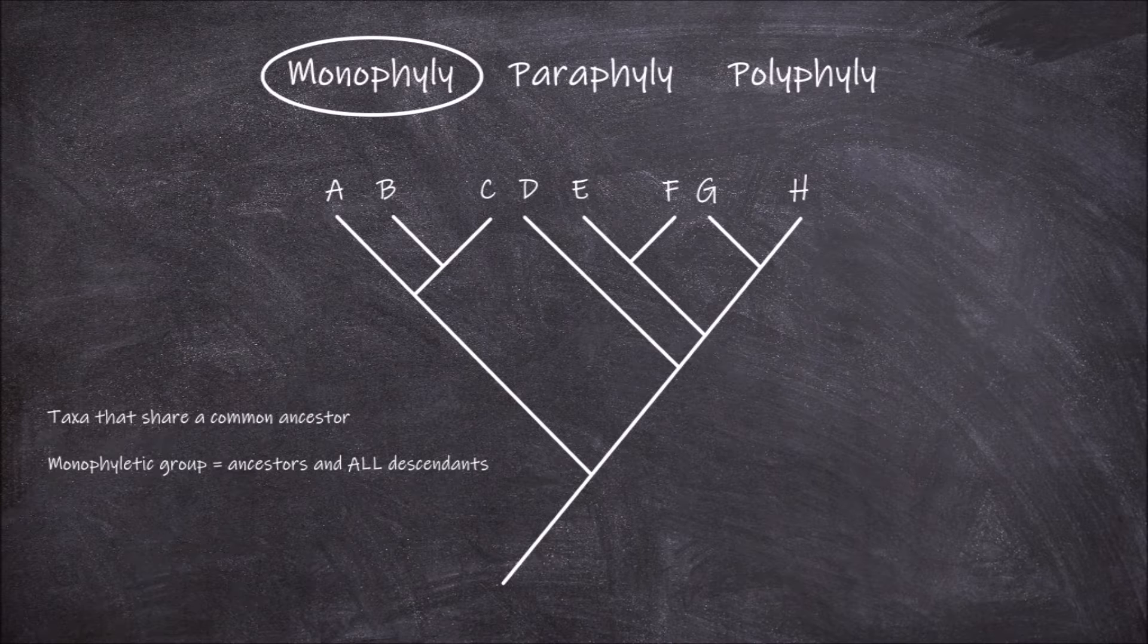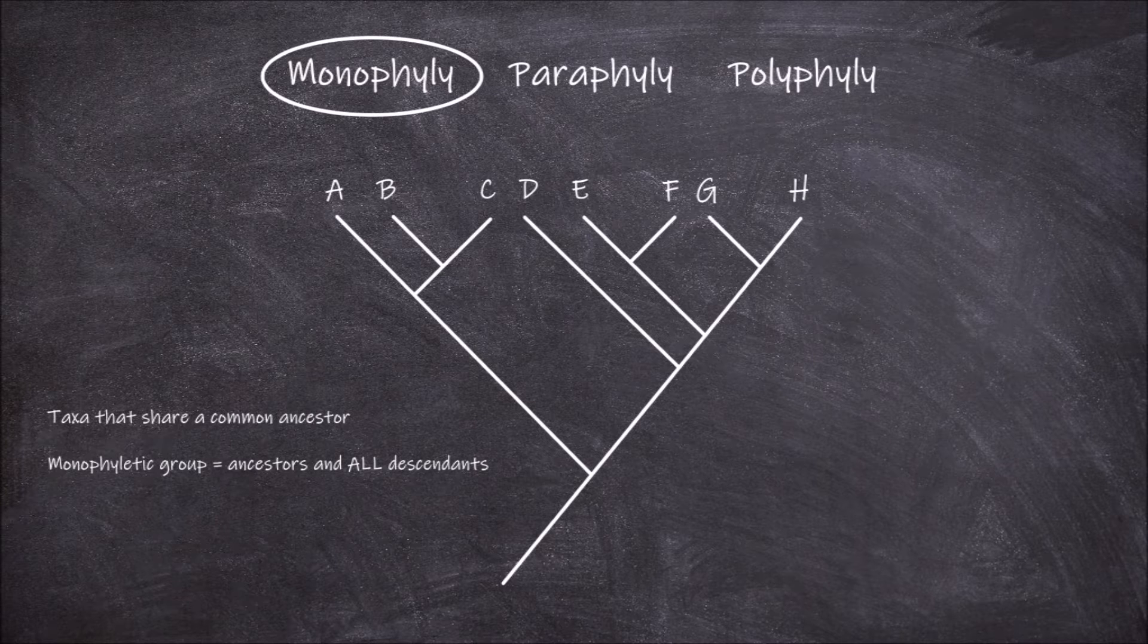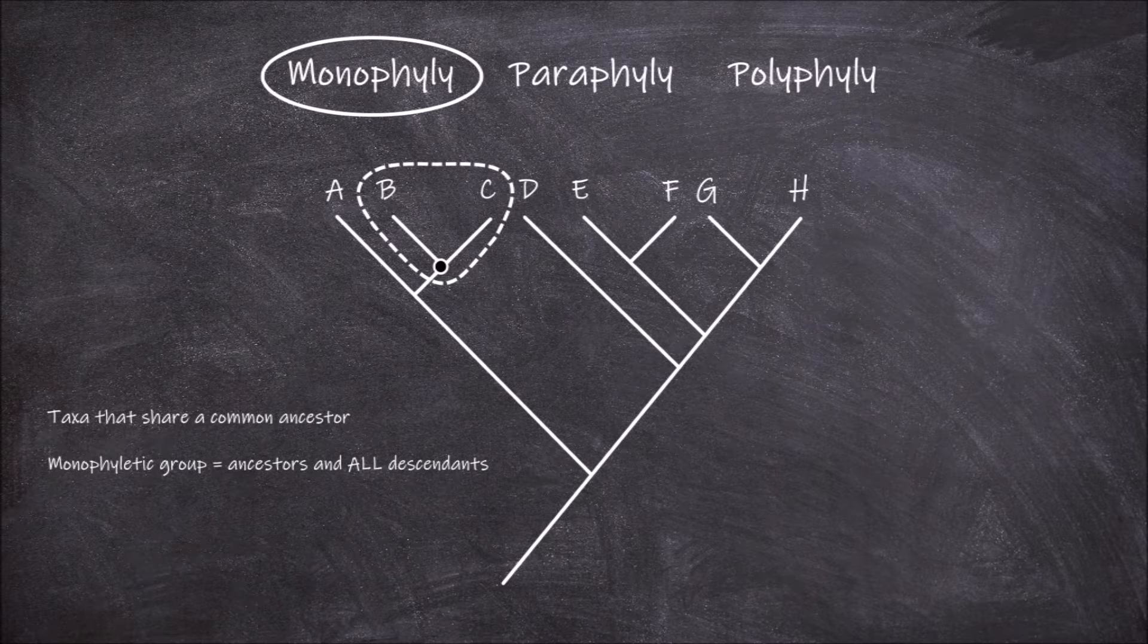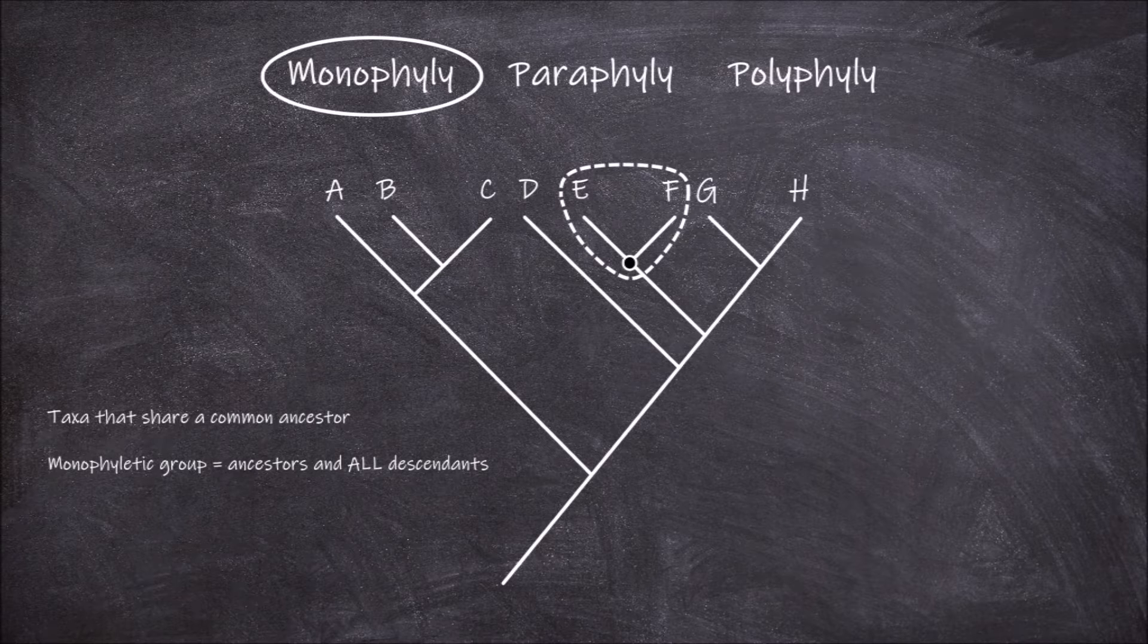If we look at our theoretical phylogenetic tree, there are many monophyletic groups within this tree. The first examples of monophyletic groups on this tree are the smallest groupings. A grouping of B and C with a common ancestor at this node form a monophyletic group, as does E and F and a common ancestor at this node.